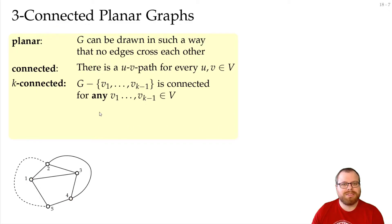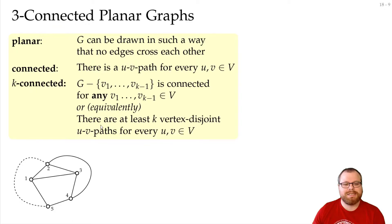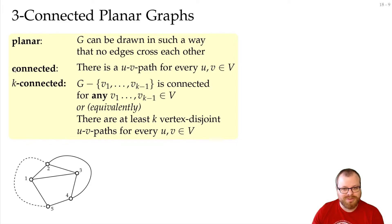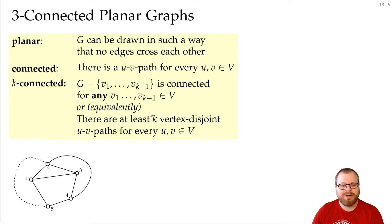There is an alternative definition for this: there are at least K vertex disjoint UV paths for every pair. So in connected — which is 1-connected — there is at least one UV path for every pair. Here we must have at least K, and they must be vertex disjoint.